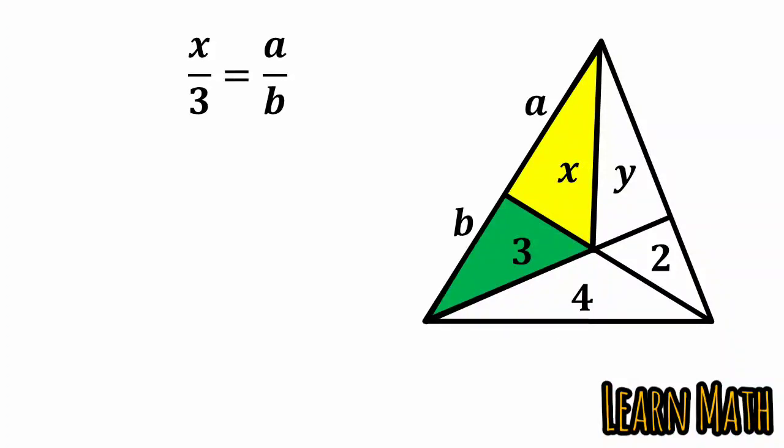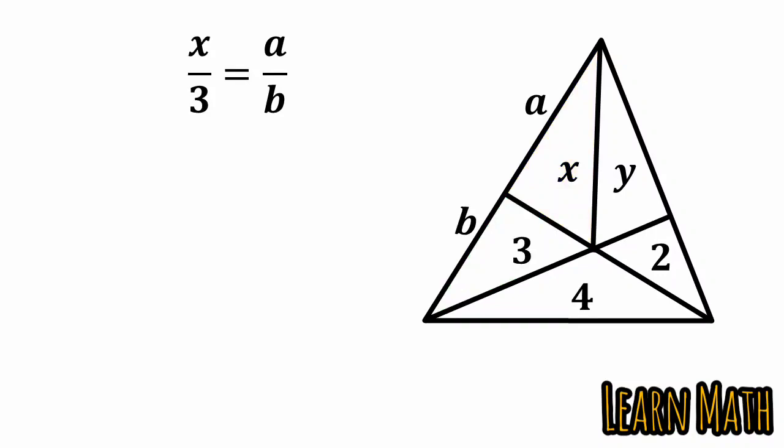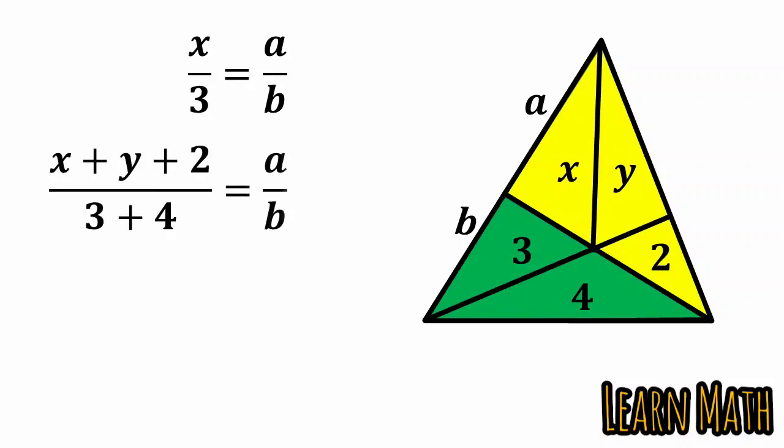Similarly, for the same bases, look at these green triangles and yellow triangles. The height is the same. So we can write x plus y plus 2 divided by 3 plus 4 is equal to a by b.